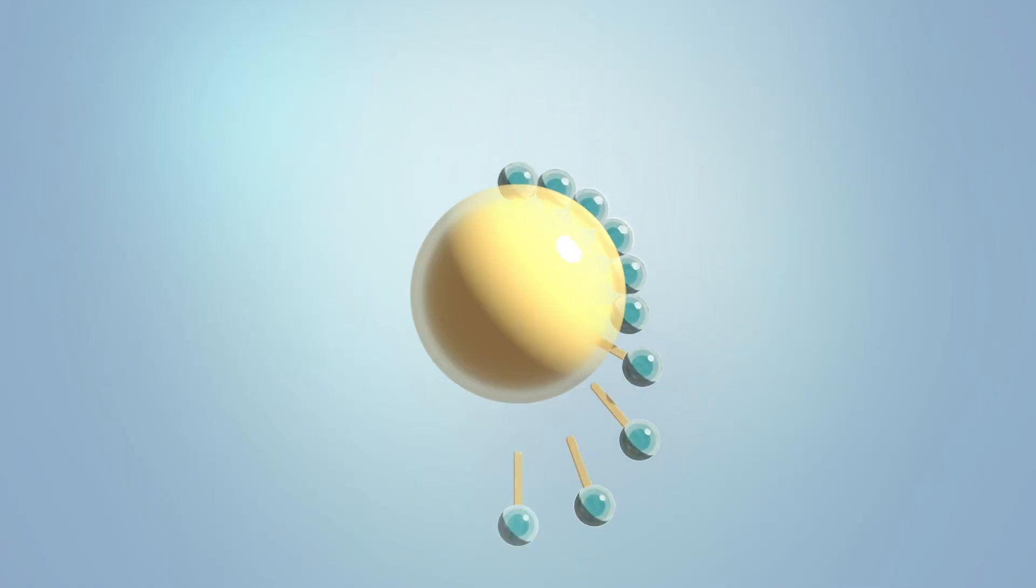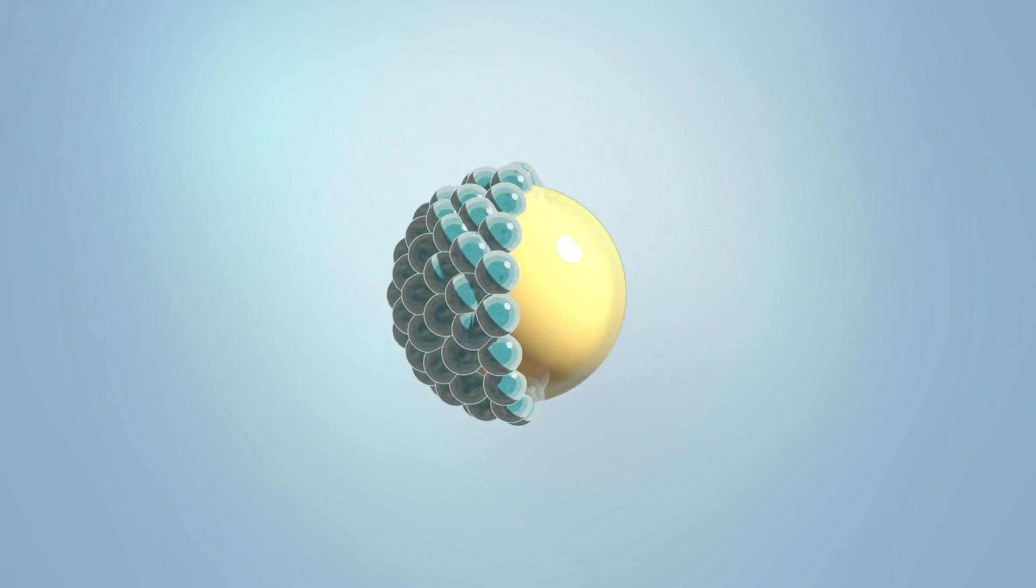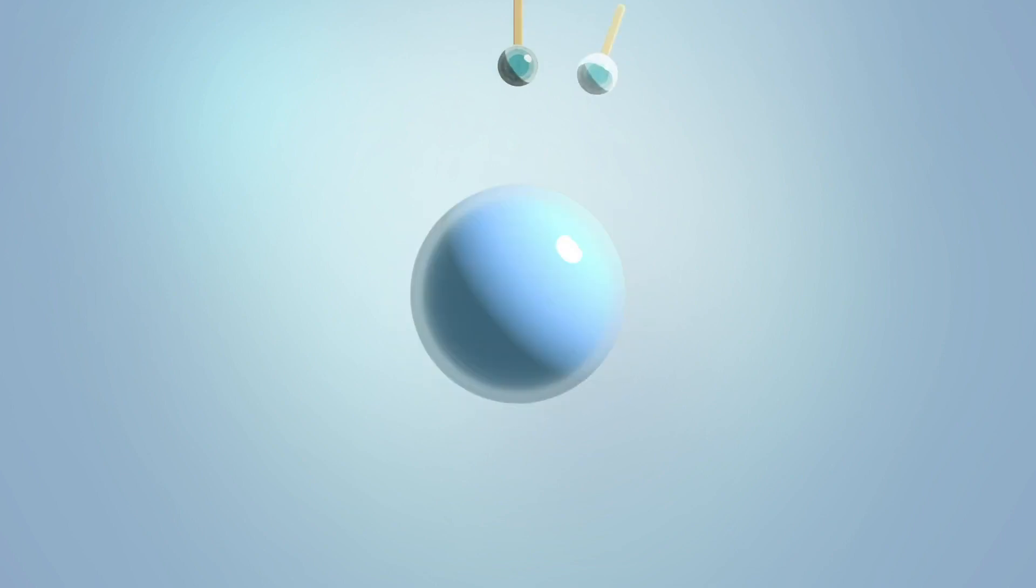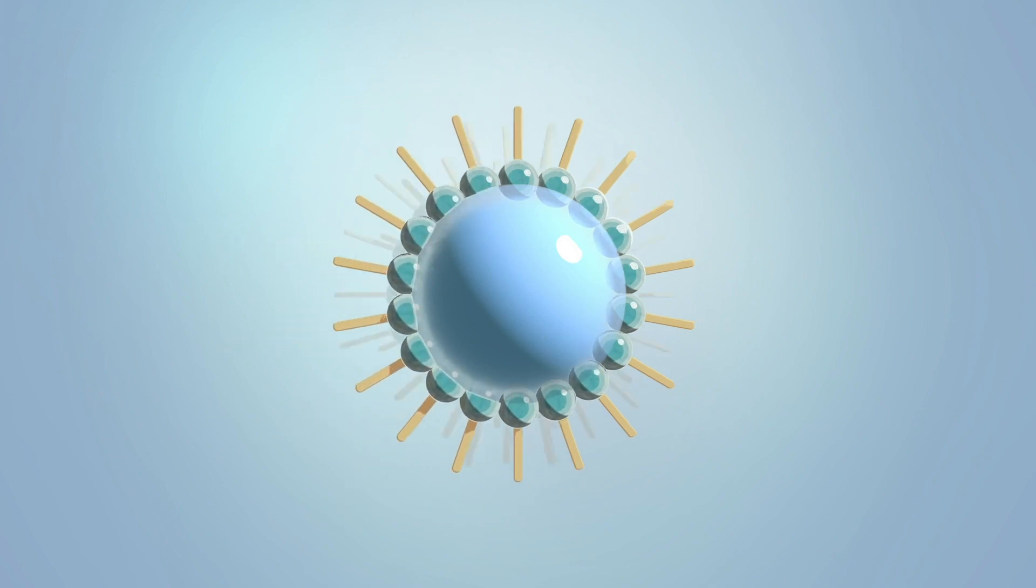Emulsifiers also work by forming a film around the globules of one phase. This prevents them from joining back together or coalescing and thus keeps them suspended in the continuous phase.